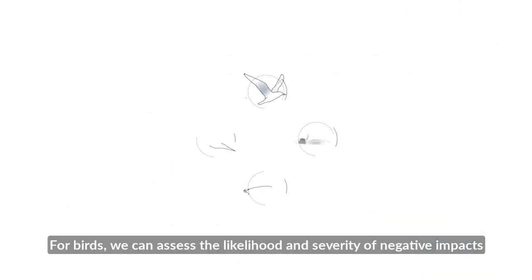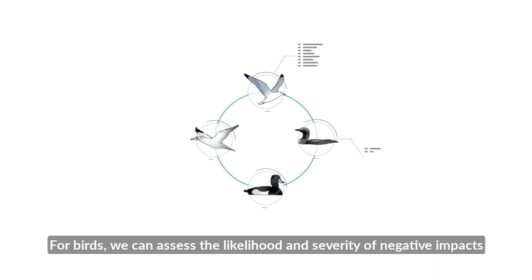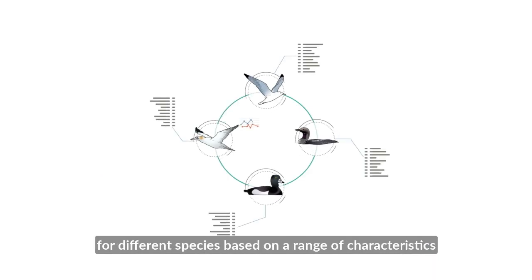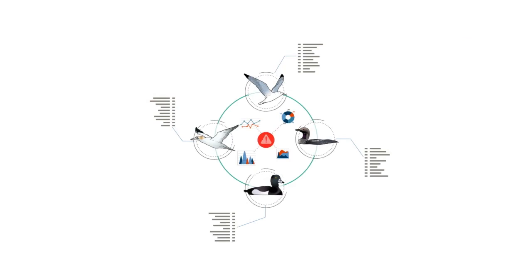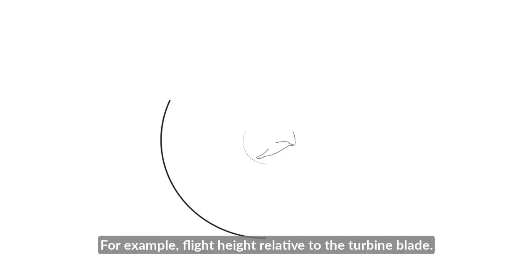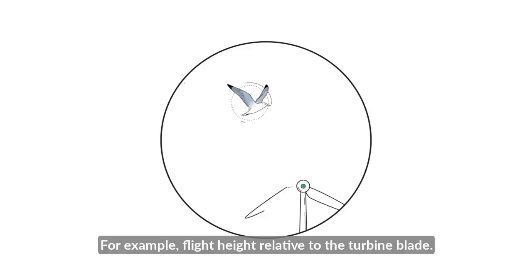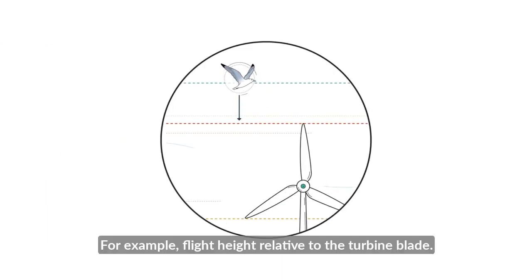For birds, we can assess the likelihood and severity of negative impacts for different species based on a range of characteristics such as body shape and size and behaviour. For example, flight height relative to the turbine blades.